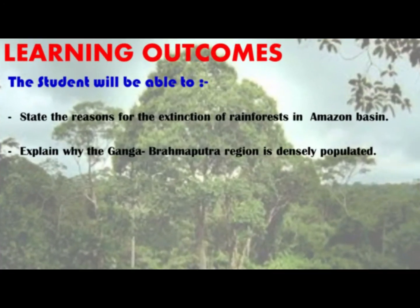Students, before starting today's topic, let's see the learning outcomes. After the completion of the video, you would be able to state the reason for the extinction of rainforest in Amazon basin. You know that the equatorial region receives high amount of rainfall and sunshine, due to which there is a growth of thick and dense forest cover. But nowadays this forest is disappearing, and we will come to know the reasons behind that. Second, explain why the Ganga-Brahmaputra region is densely populated. The Ganga-Brahmaputra region is basically the Indian subcontinent, and we will come to know the reasons for the high growth of population in this area.